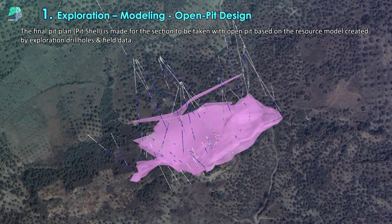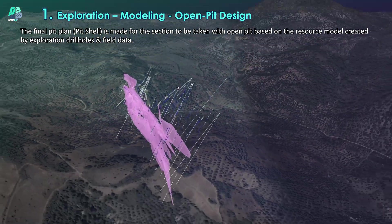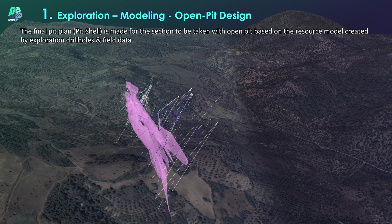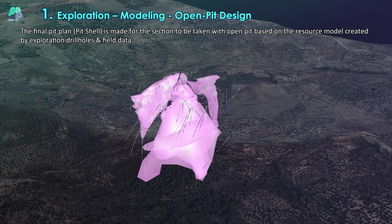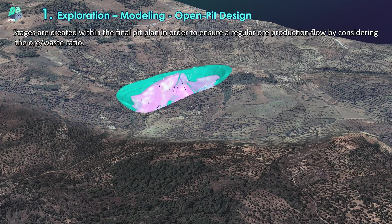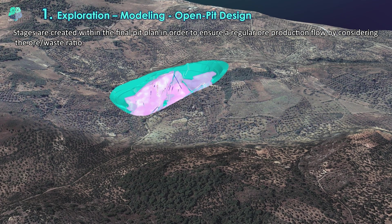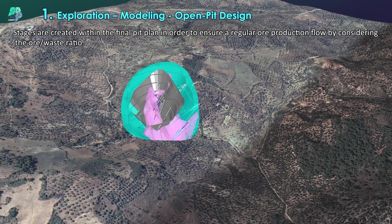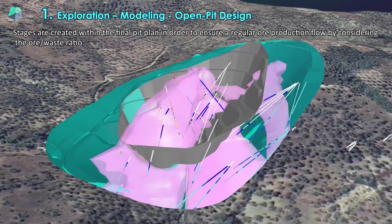The final pit plan or pit shell is made for the section to be taken with open pit, based on the resource model created by exploration drill holes and field data. Stages are created within the final pit plan in order to ensure a regular ore production flow by considering the ore and waste ratio.